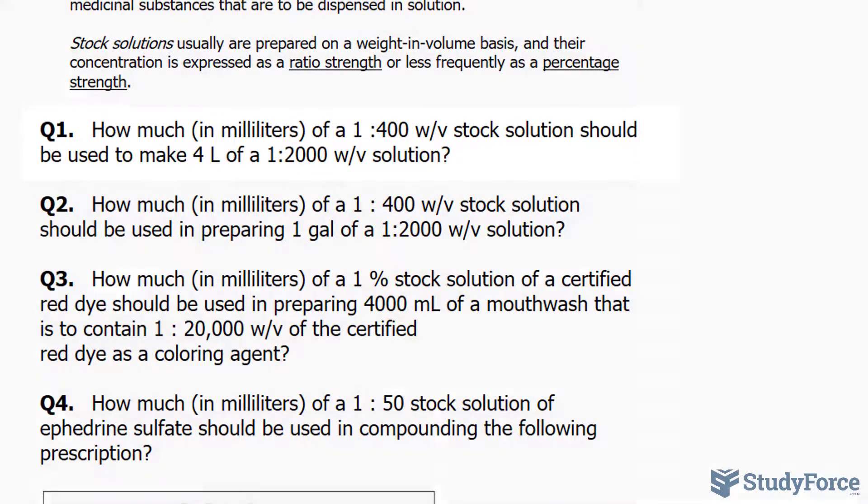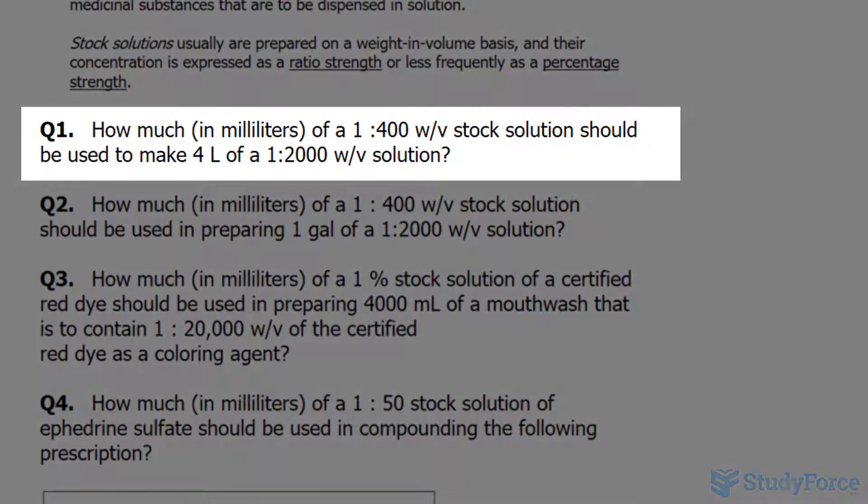The very first question reads: how much in milliliters of a 1 to 400 weight per volume stock solution should be used to make 4 liters of a 1 to 2,000 weight per volume solution?